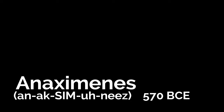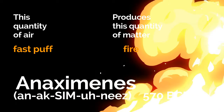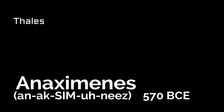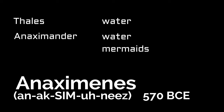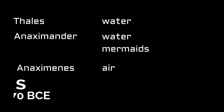Anaximenes thought that different quantities of air produced different quantities of matter. His theory was that everything came from air. He started out agreeing with Thales that everything came from water, then Anaximander thought that humans came from mermaids, and now Anaximenes is saying that everything comes from air.